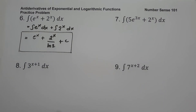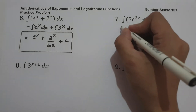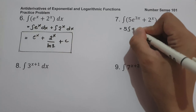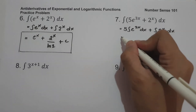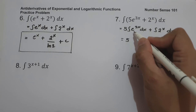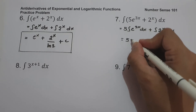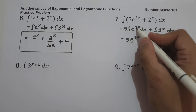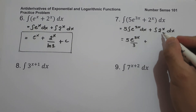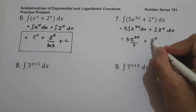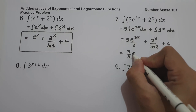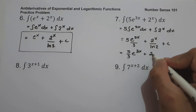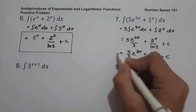On number seven, what is the antiderivative of (5e^(3x) + 2^x) dx? We separate this as 5 times the antiderivative of e^(3x) dx plus the antiderivative of 2^x dx. The antiderivative of e^(3x) is e^(3x)/3, and the antiderivative of 2^x is 2^x/ln(2). The final answer is (5/3)e^(3x) + 2^x/ln(2) + c.